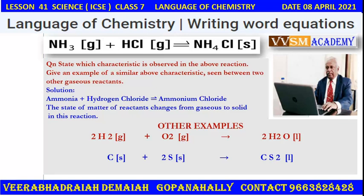Solid and solid combined together can give a liquid; gas and gas combined together can give a liquid. For example, two molecules of ammonia — NH₃ is a gas, HCl is a gas — but when they combine, you get ammonium chloride, which is a solid. This is a sublimation reaction, my dear friends.